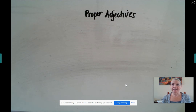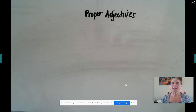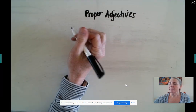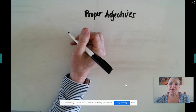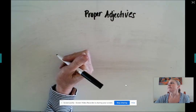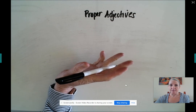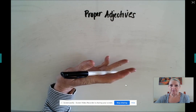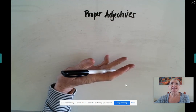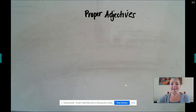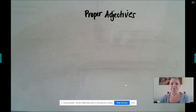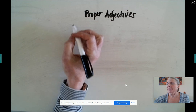Today we're going to be doing lesson 5.10 and it covers proper adjectives. When you think about proper adjectives, I want you to think about some proper nouns. What is a proper noun? Proper nouns are always going to start with a capital letter because they are names of people or places or things.